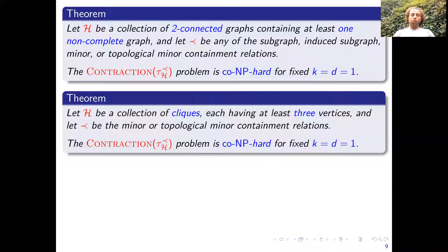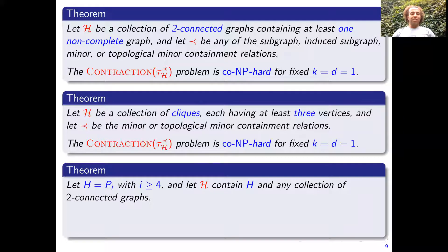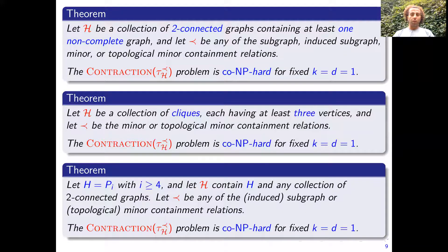We have now covered 2-connected graphs and cliques. The graphs not covered by these results are, for instance, paths — they are not 2-connected and not cliques, except P2. We prove that if h is a path with at least four vertices and calligraphic H contains this path plus any collection of 2-connected graphs, and the relation is any of the four we consider, then the contraction problem is again hard for fixed k equal d equal one.